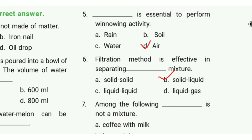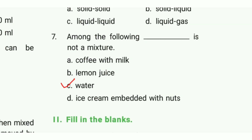Fifth one: what is essential to perform winnowing activity? The answer is option D, air. Sixth one: filtration method is effective in separating which mixture? The answer is option B, solid-liquid mixture. Seventh one: among the following, which is not a mixture? The answer is option C, water.